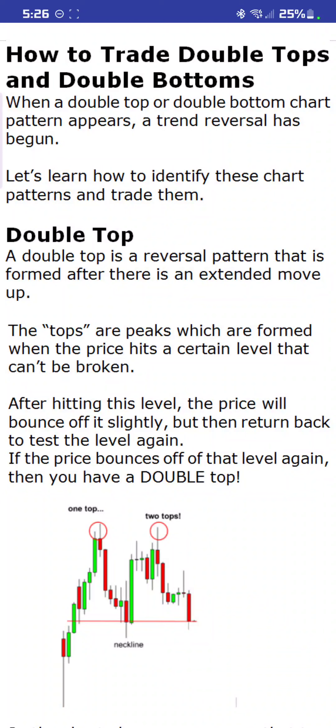Let's learn how to identify these chart patterns and to trade them. The double top is a reversal pattern that is formed after there is an extended move up. The tops are peaks, which are formed when price hits a certain level that can't be broken. After hitting this level, the price will bounce off it slightly but then return back to test the level again. In the diagram, we have bullish momentum starting to range upwards, and we find resistance at the top and reject downward.